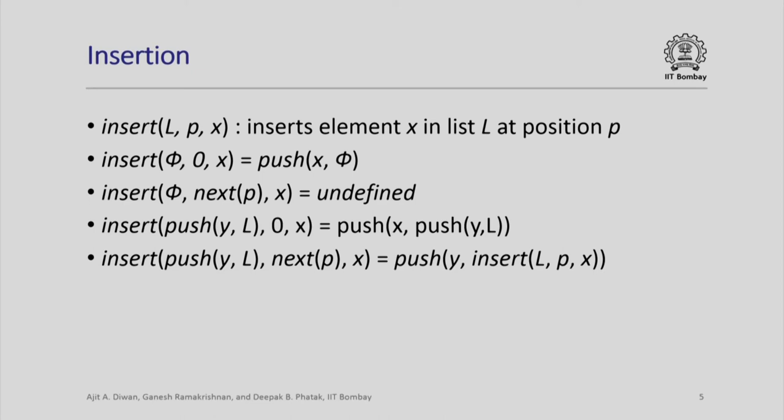If we are inserting into a non-empty list push(y, l) at position 0 the element x, we simply push x into that list, giving push(x, push(y, l)). Otherwise, if we are inserting at position next(p) into the list push(y, l), we keep y at the 0th position and recursively insert x into list l at position p. This essentially inserts element x at position p and shifts all elements that come after position p right by one.